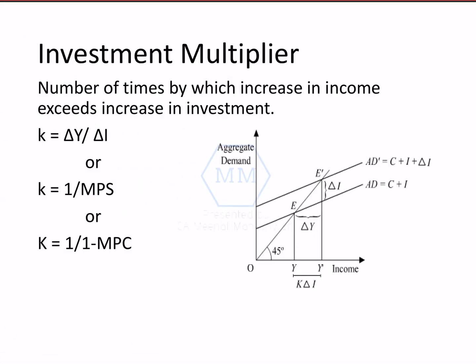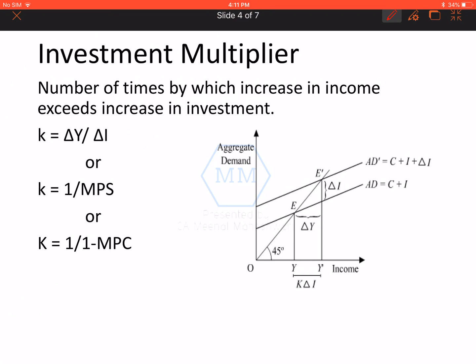Now, what is investment multiplier? As the name suggests, multiplier effect means something is multiplying. If there is even a small investment in the economy, then because of this, the income in the economy increases multiple times. The definition of investment multiplier is: number of times by which increase in income exceeds increase in investment. How many times will our income increase due to investment is called investment multiplier.